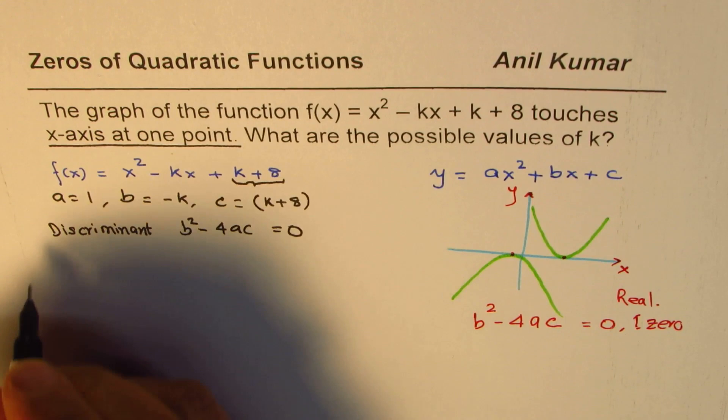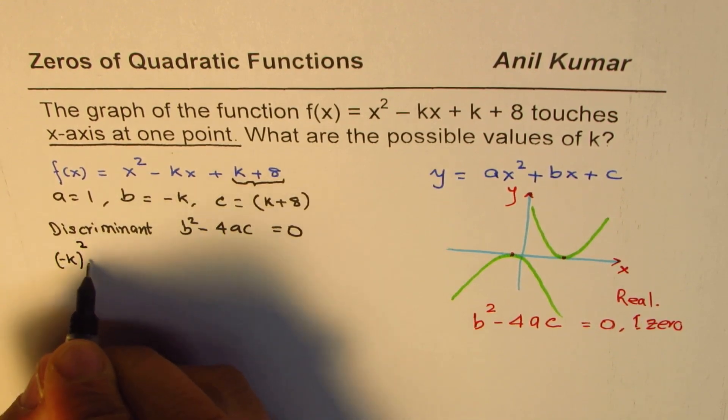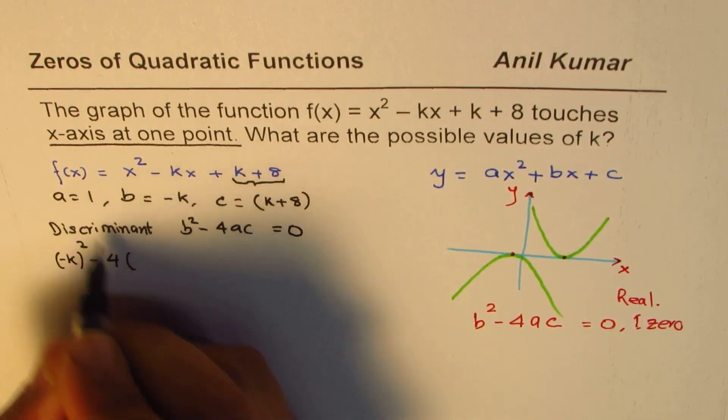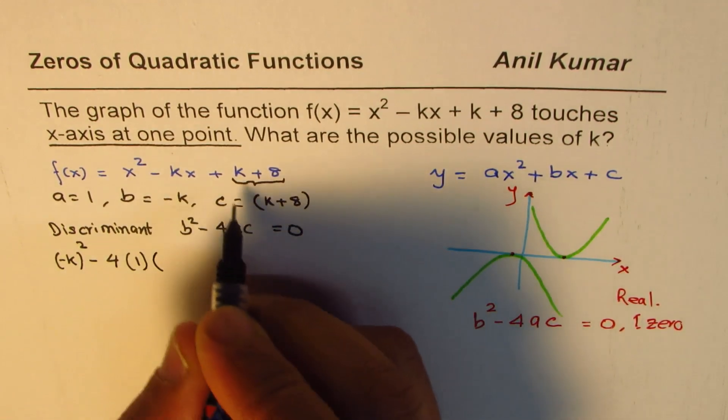We already know b is minus k, so we say minus k, that is squared, minus 4 times, a is 1, and c is k plus 8.